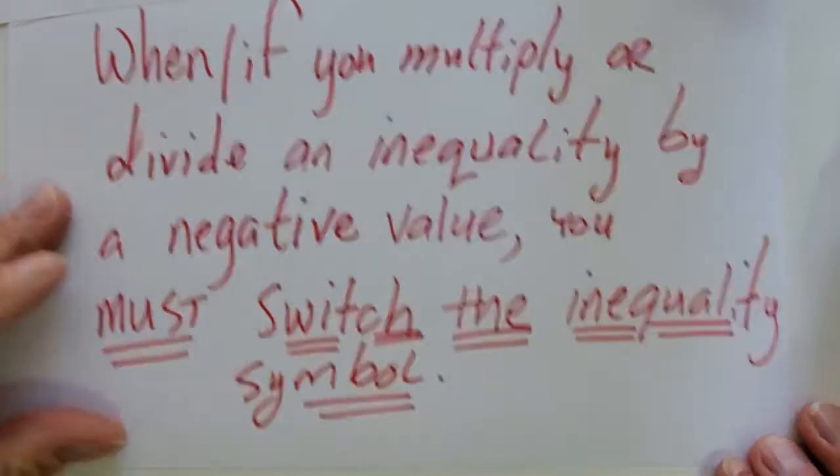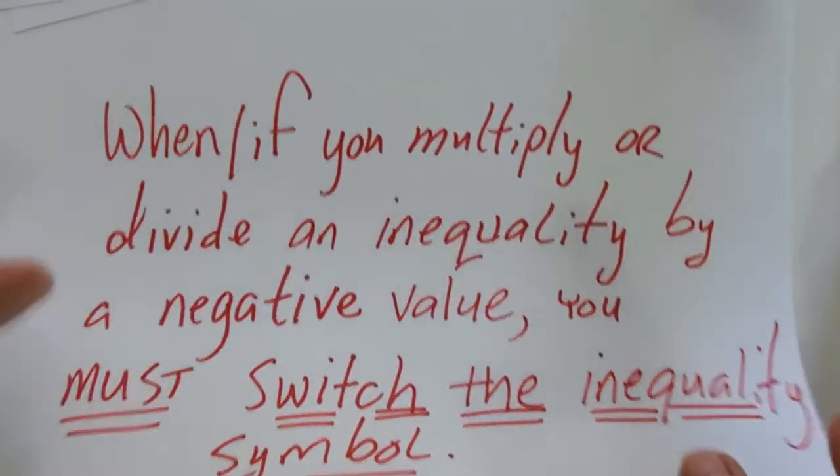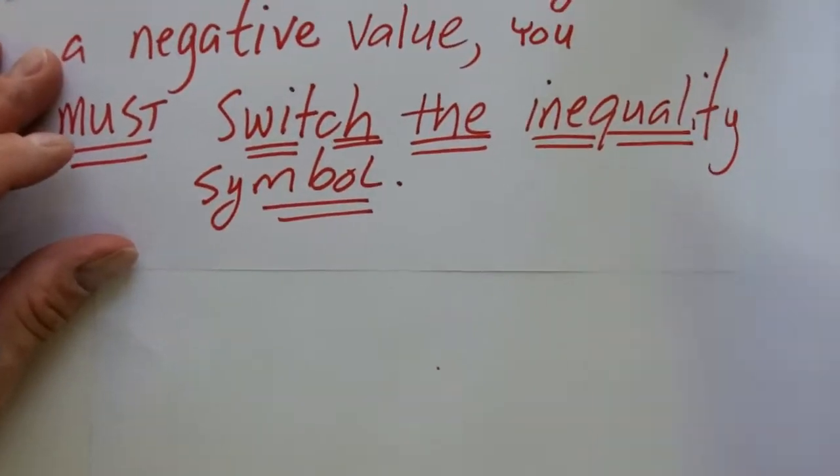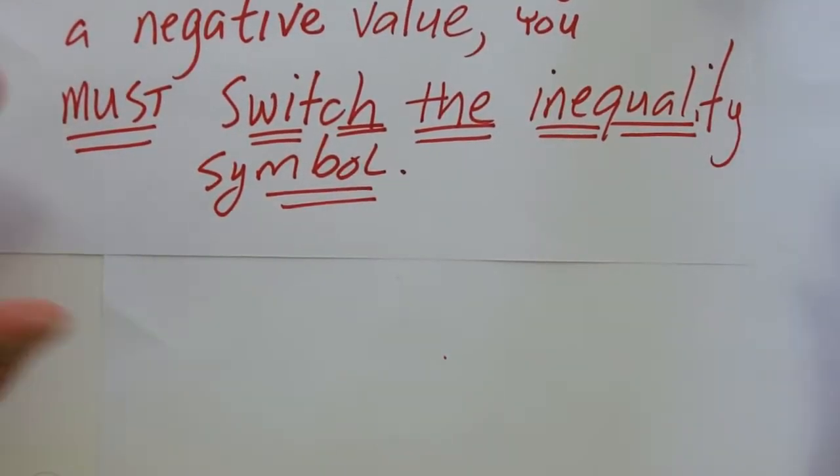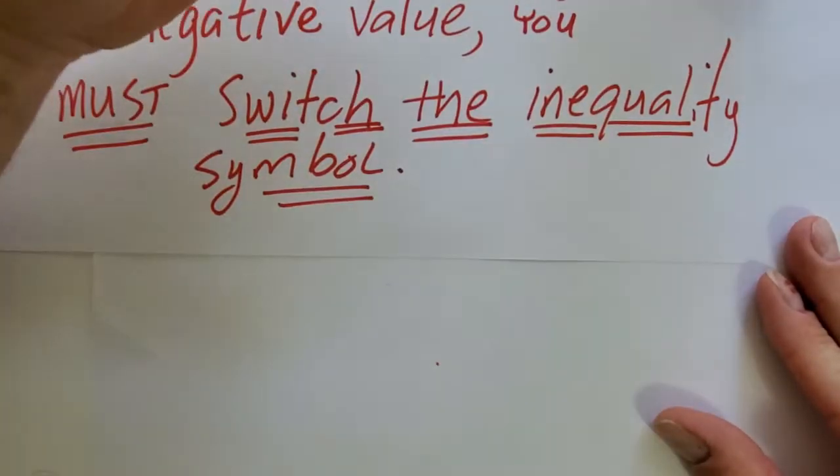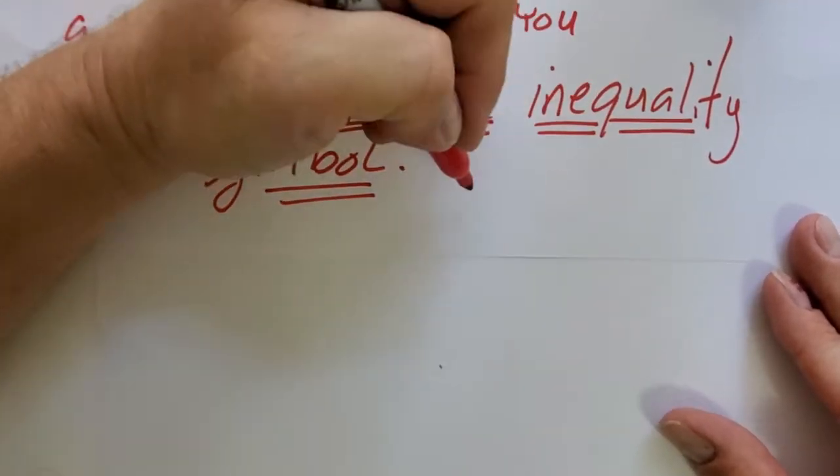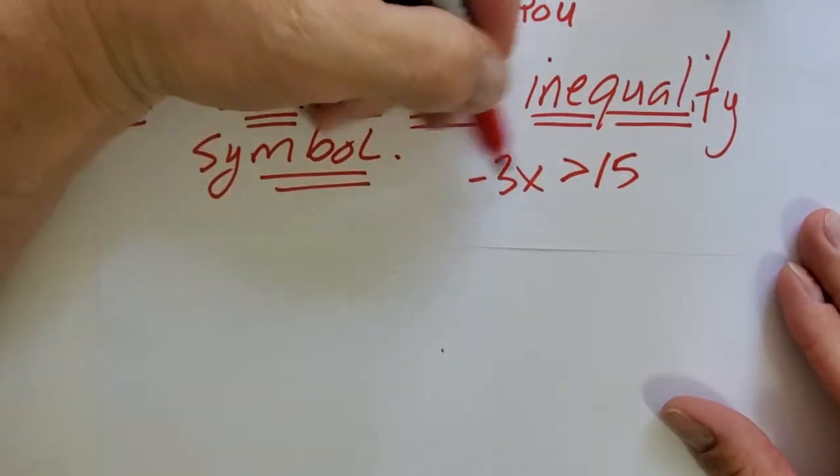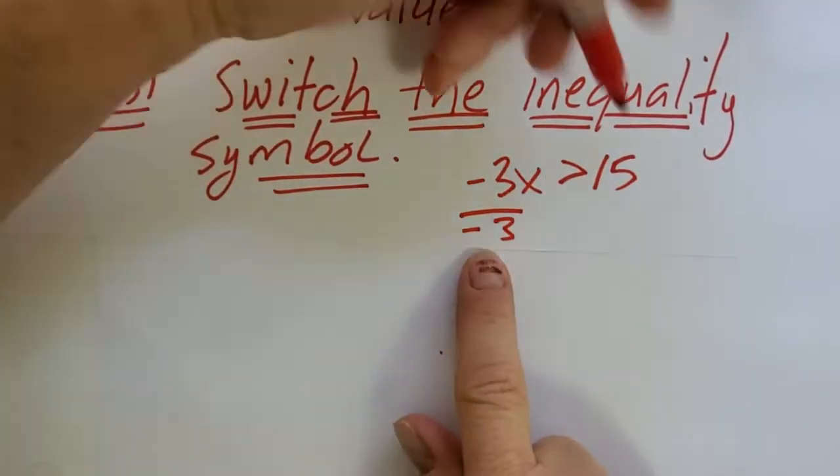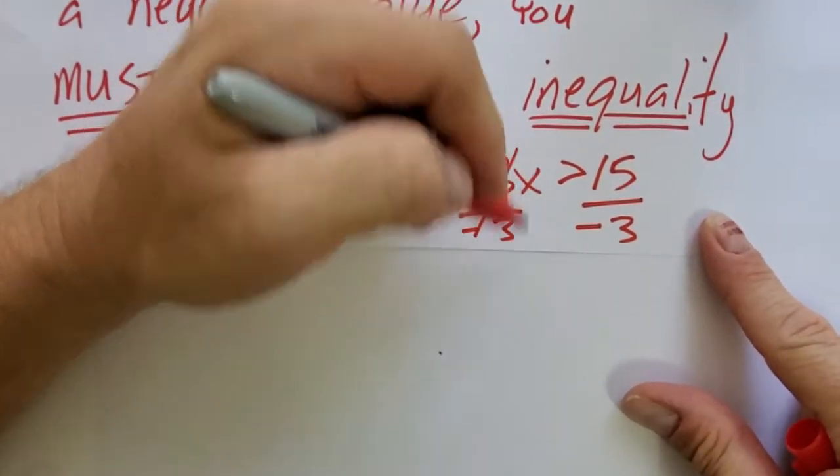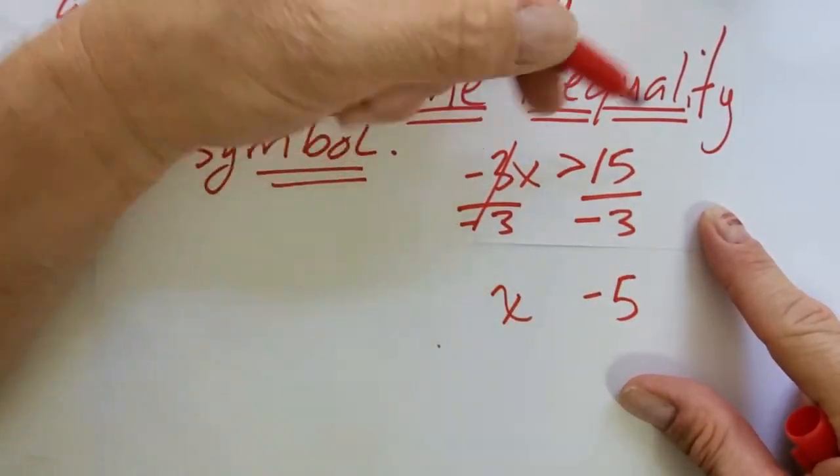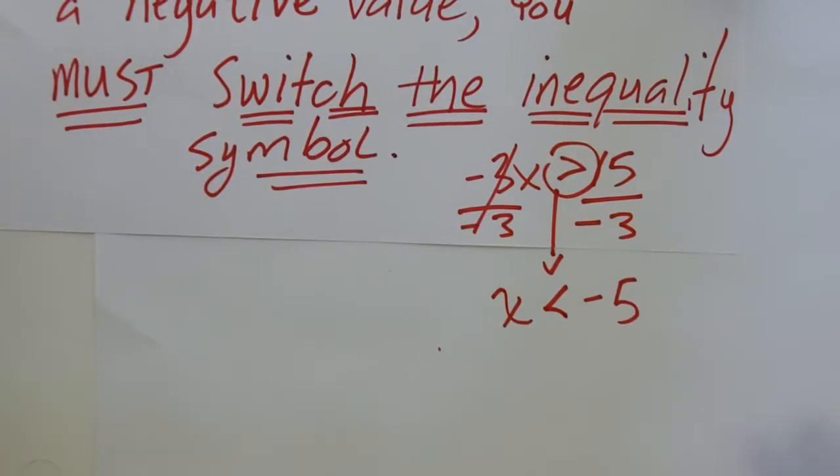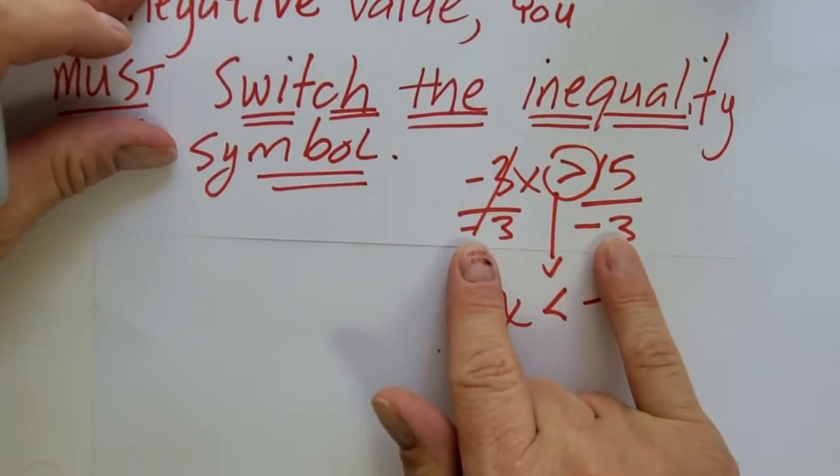Or you will be wrong every time. You will be pretty frustrated in algebra when you continually forget. Anytime you have an inequality, and you divide it or multiply it to both sides, and you divide by a negative, take the symbol, you must switch it the other way, or you will be wrong all the time. Why did I switch the symbol? I divided by a negative.